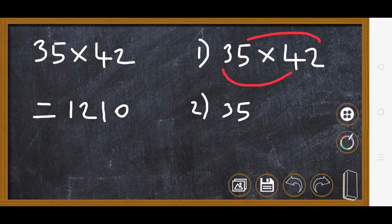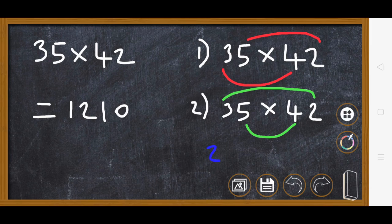Now step number two: again write the two numbers here. What you do is multiply the inner numbers—inner number means five and four. Outer number means three and two.